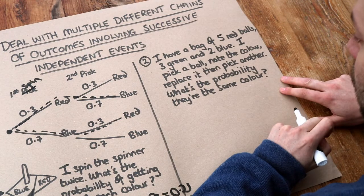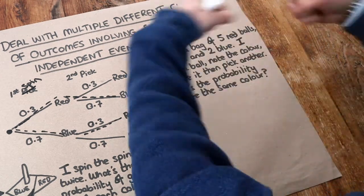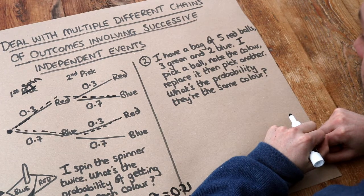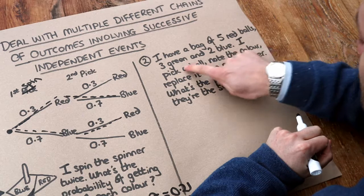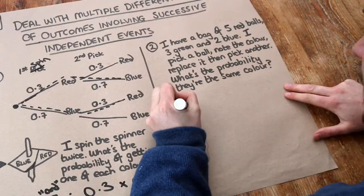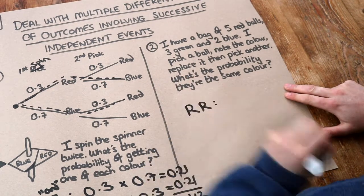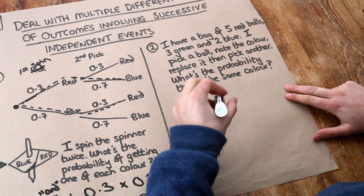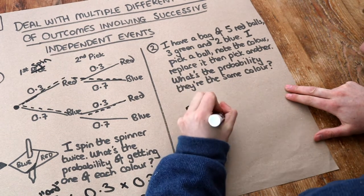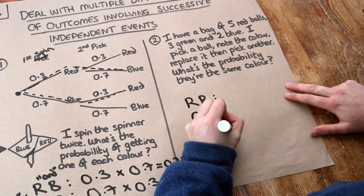I've got a bag of five red balls, three green, and two blue. I pick a ball, note the colour, replace it, and then pick another. What's the probability that they're the same colour? Well, if you get two balls of the same colour, what could happen? It could be getting red on the first pick and red on the second pick. Or green on the first pick and green on the second. Or blue on the first pick and blue on the second.